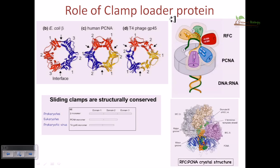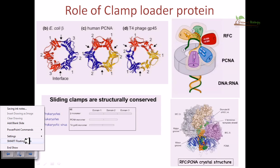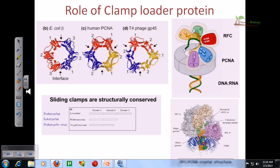We have seen a couple of times that this clamp loader protein is a very important protein which helps to increase the processivity of DNA polymerase C during the DNA replication stages.